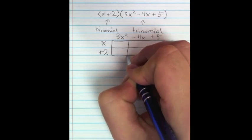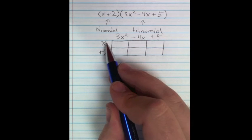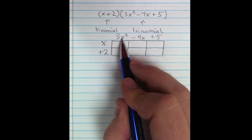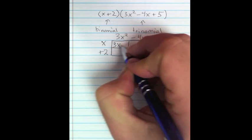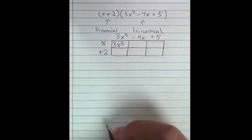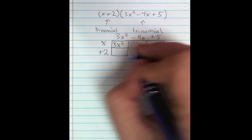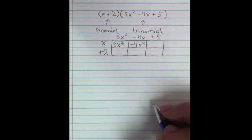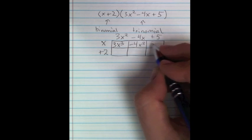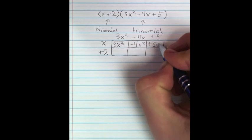Then we're going to turn it into six boxes. In the top left box, we're going to cross x with 3x squared, and we get 3x to the third. In the box right next to it, we're going to cross negative 4x with x, and we get negative 4x squared. And then we're going to cross 5 with x, and we end up getting positive 5x.